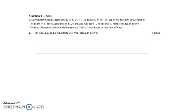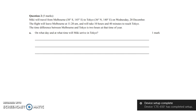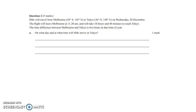So Mickey will be traveling from Melbourne to Tokyo on the 20th of December. The flight will leave Melbourne at 11:20 AM and it will take 10 hours and 40 minutes to reach Tokyo. The time difference between Melbourne and Tokyo is two hours at that time of the year. On what day and what time will Mickey arrive in Tokyo?